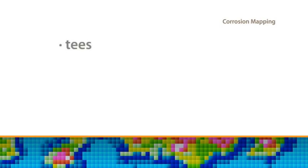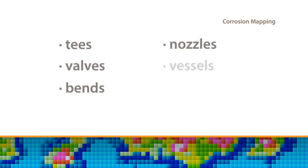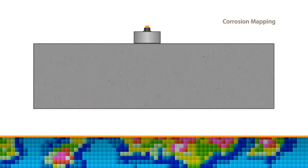The versatility of the system allows for either manual or automated control of the probe during scanning, so the technique is suitable for use on complex geometries such as T's, valves, bends, nozzles and vessels. Corrosion mapping uses a zero degree ultrasonic probe which emits an ultrasonic wave from the probe head directly into the material being scanned. The system measures the wall thickness by calculating the time taken for the ultrasonic signal to travel back from the opposite wall boundary.